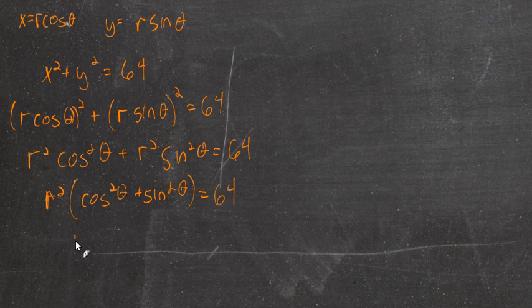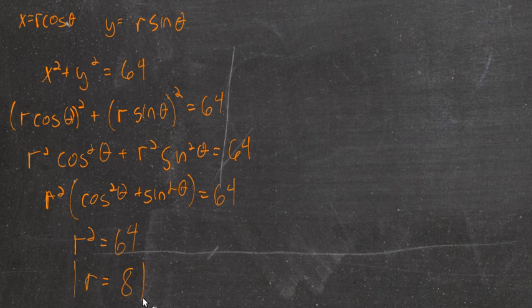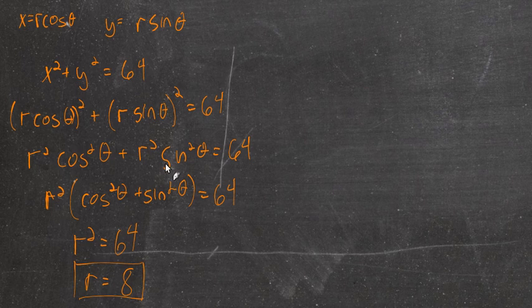Hopefully you recognize this as a Pythagorean identity. Cosine squared plus sine squared is 1. So r² times 1 is r² equals 64. So r equals 8. So this would be the polar equation. It's very simple, much more simple than this.